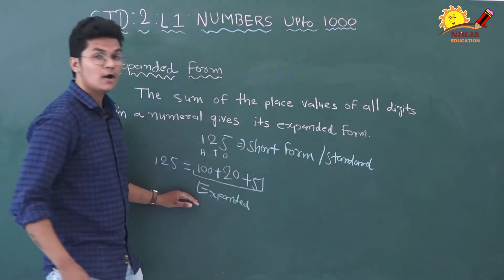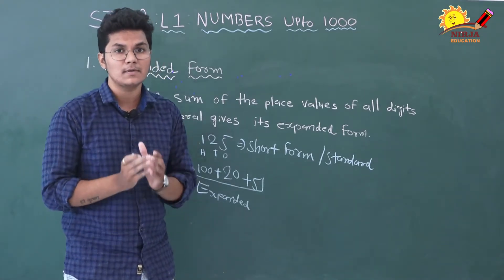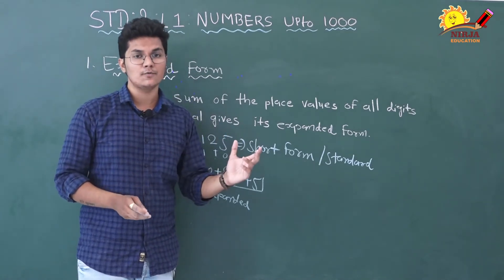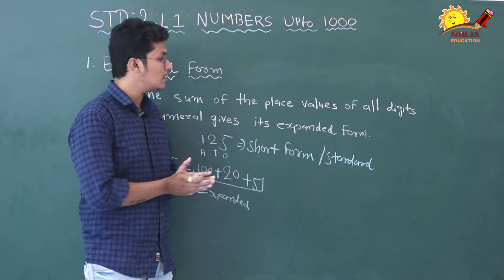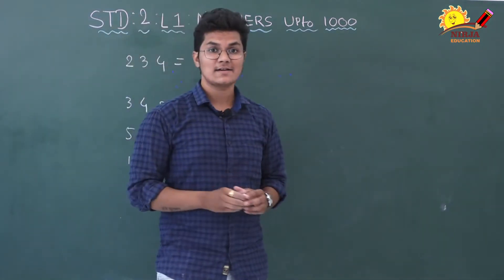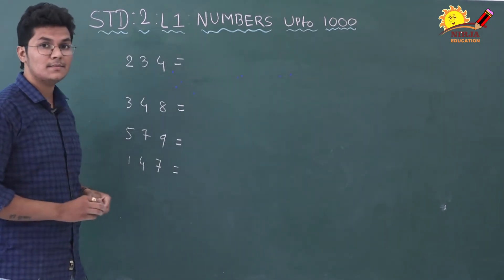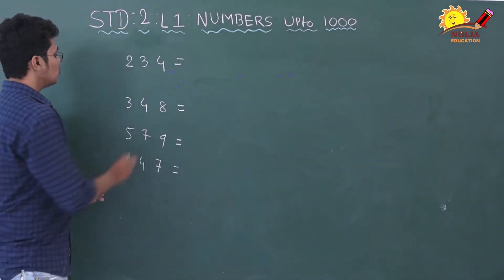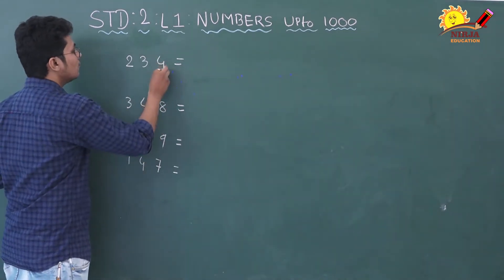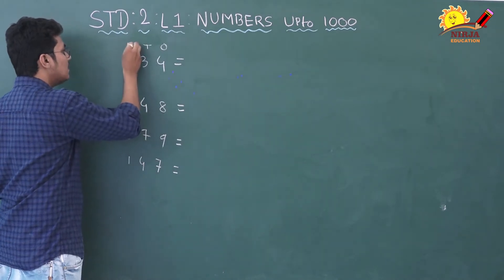So, expanded form mein hume kuch nahi karna hai. Bas, diye gaye number ke sabhi digits ki place value, summation ke roop mein likhni hai. Chalo, 2-3 examples aur dekhte hain. Now, let's write the expanded form of all these numbers. Yaha pe place value likh deta hoon: yeh hai ones ka place, yeh hai tens ka place, aur yeh hai hundreds ka place.